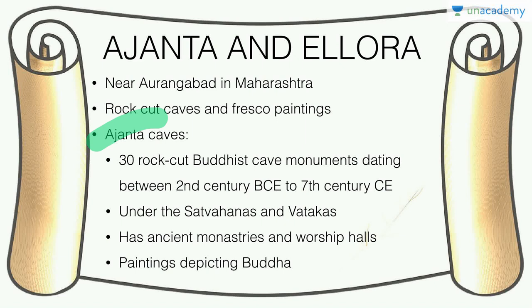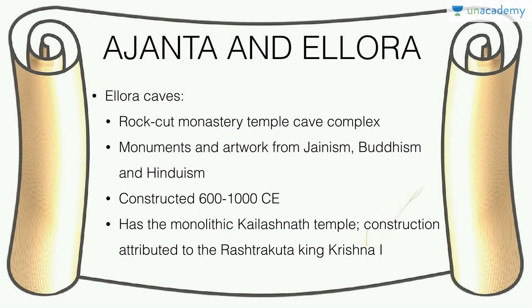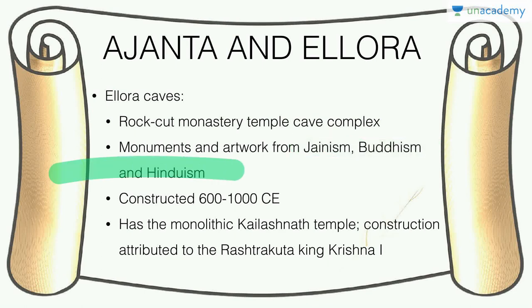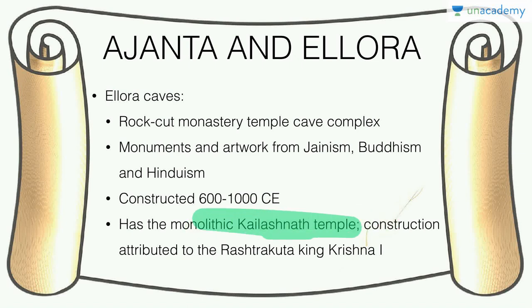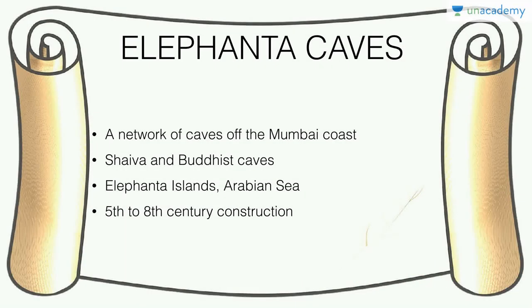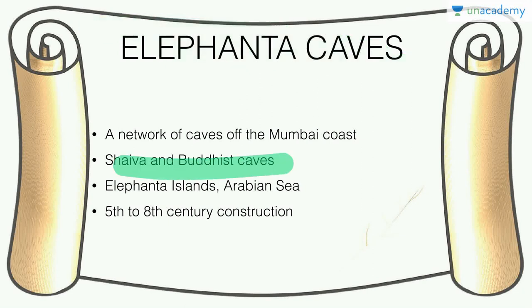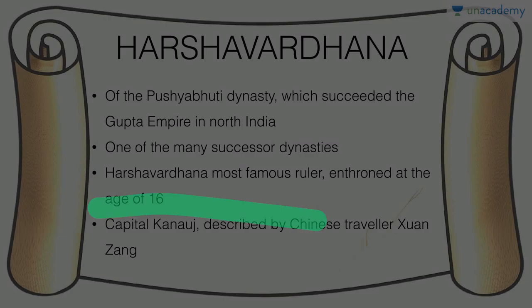Ellora has the monolithic Kailashnath temple, attributed to Rashtrakuta king Krishna I. Also notable are the Elephanta caves — Shaiva and Buddhist caves on the Elephanta islands in the Arabian Sea off the coast of Mumbai, built during the 5th to 8th century, featuring huge structures. If you have visited Mumbai, you may have taken a ferry there. Finally, we go a little north and talk about Harshavardhan.